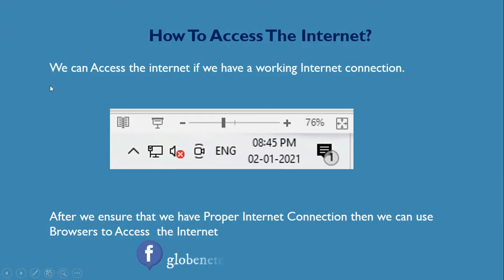To check if we have internet access, on the right-hand side down here we see this icon, which means we have a working internet connection. After ensuring we have a proper internet connection, we can access the internet using special software called browsers.